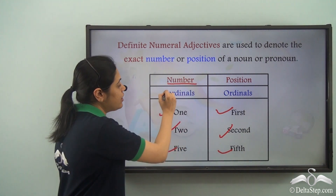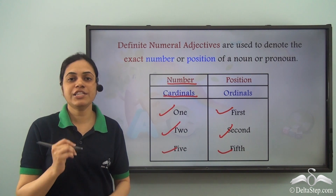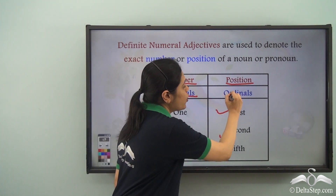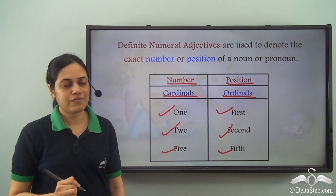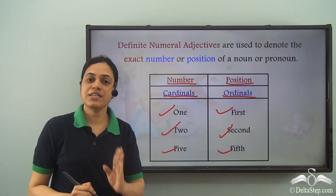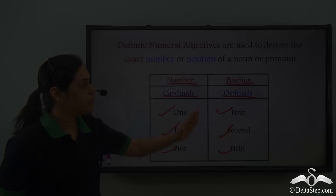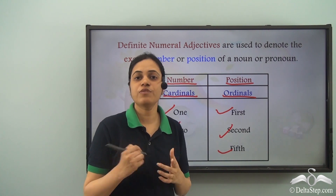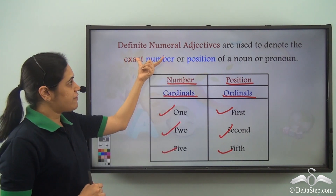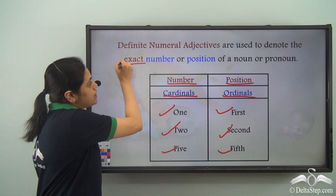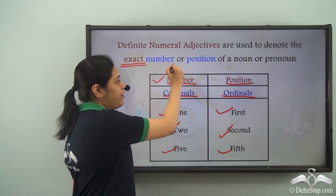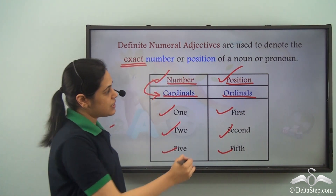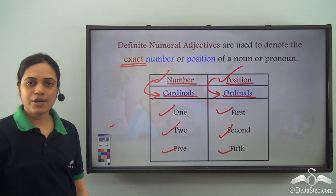When I denote the exact number, then it is said to be a cardinal definite numeral adjective. And when I denote the exact position, then it is called the ordinal definite numeral adjective. So, cardinal means exact number — 1, 2, 3 or whatever — and ordinal means exact position, like 1st, 2nd, 3rd, 4th, 5th, whatever. Definite numeral adjectives tell us the exact number or position: number is denoted by cardinals and position is denoted by ordinals.